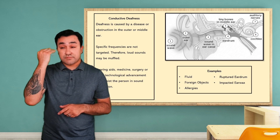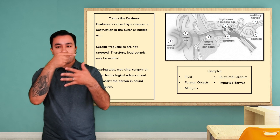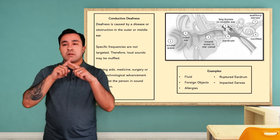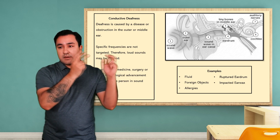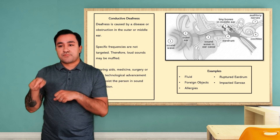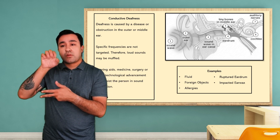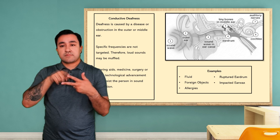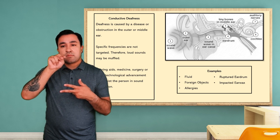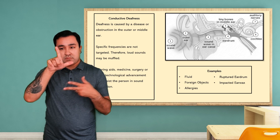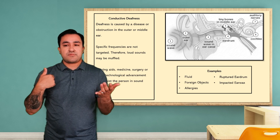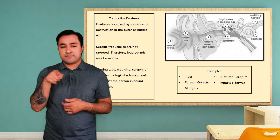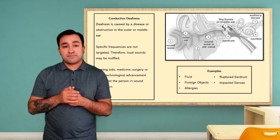There are several causes of deafness, but they can be categorized into three main groupings: conductive deafness, sensorineural deafness, and mixed deafness. This video will discuss these three groupings.